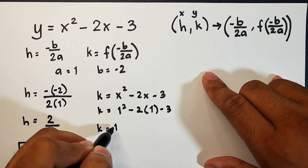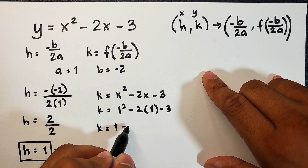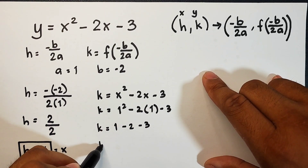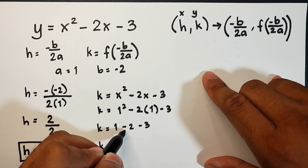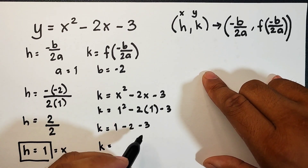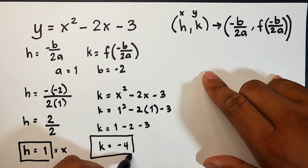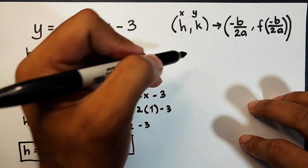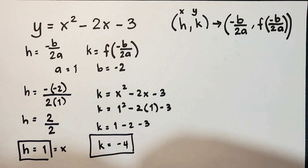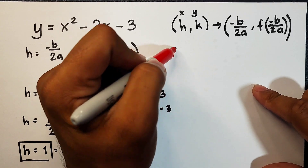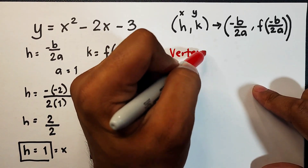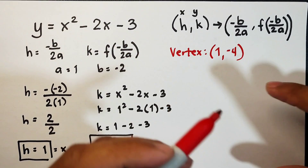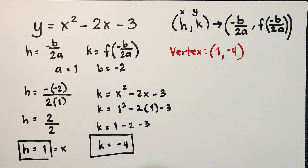k is equal to 1 squared which is 1, minus 2 times 1 which is negative 2, then minus 3. Simplifying: 1 minus 2 is negative 1, minus 3 is negative 4. So the value of k is negative 4. The vertex of this given quadratic function is 1 comma negative 4. I hope you learned something from this video on how to find the vertex of a quadratic function or a parabola.